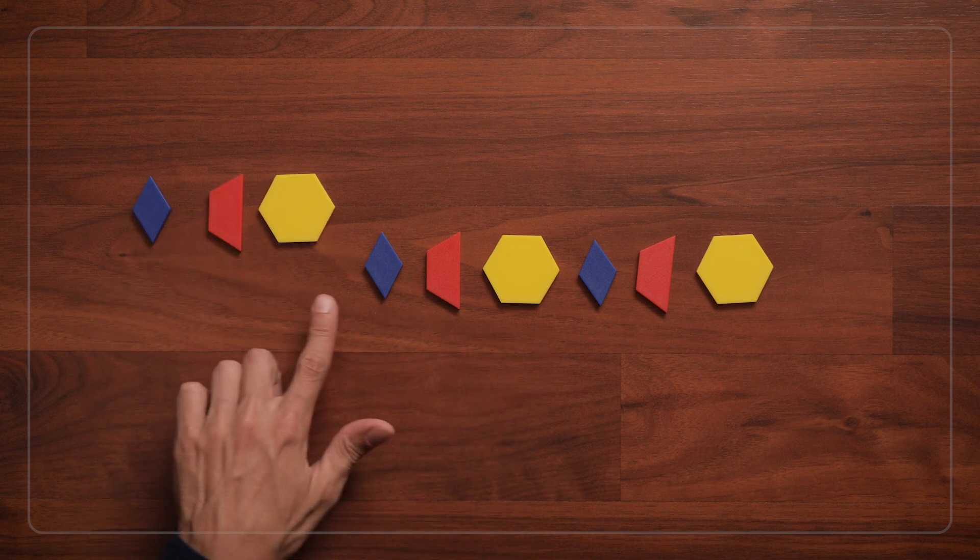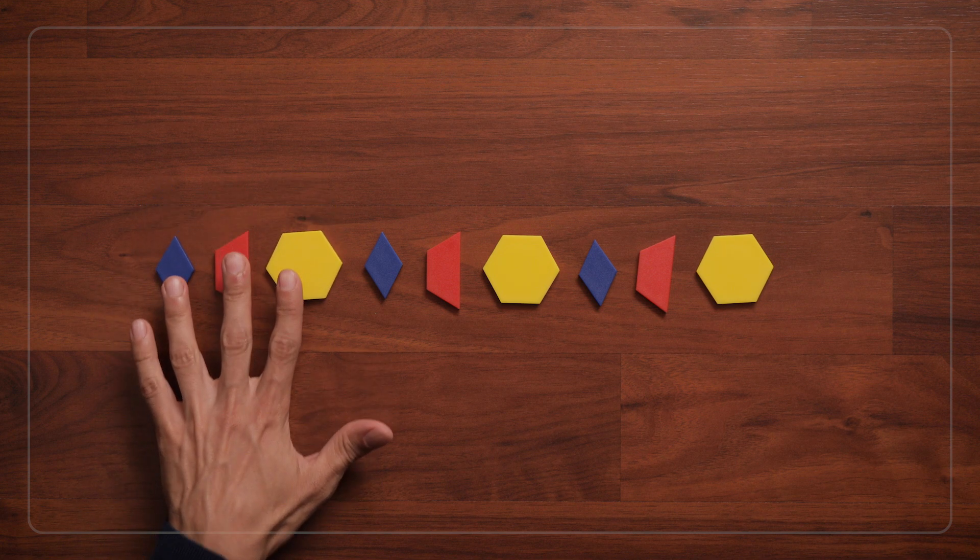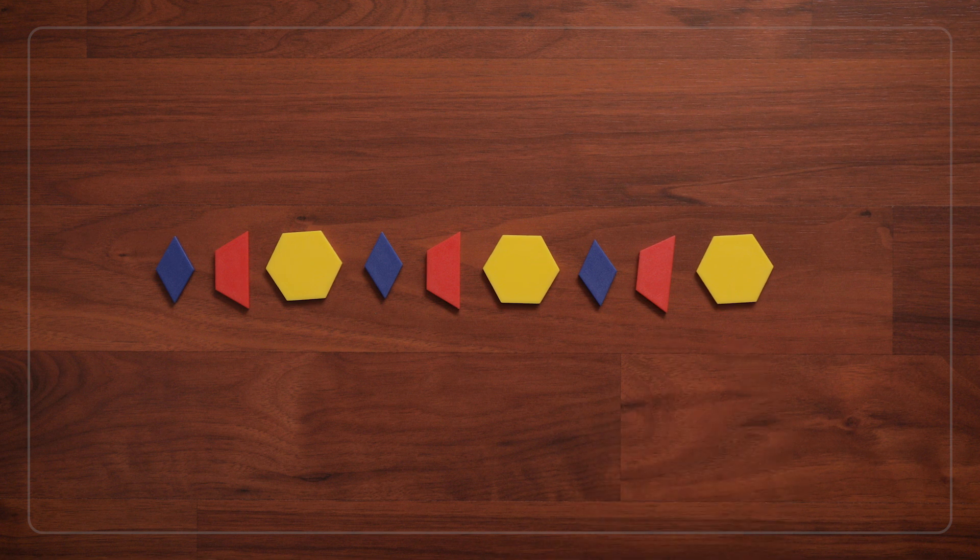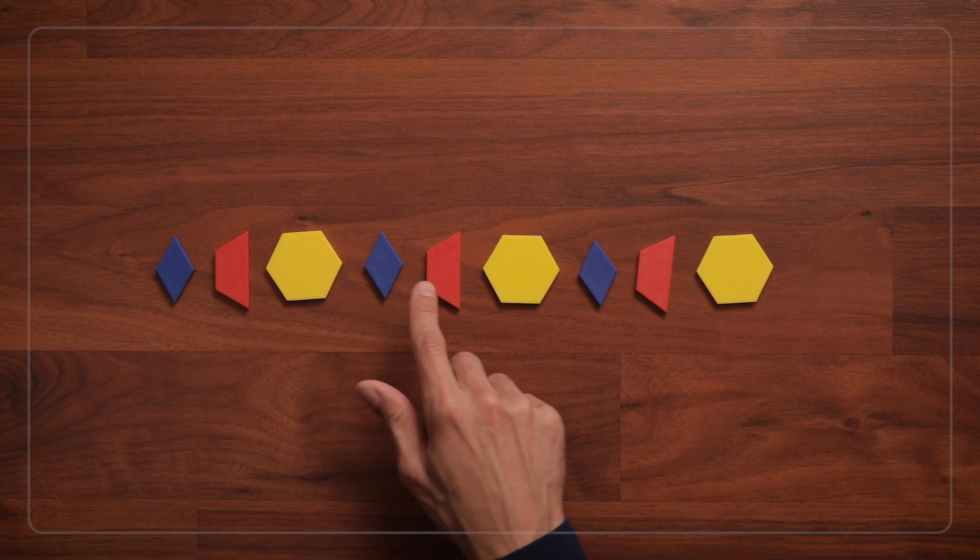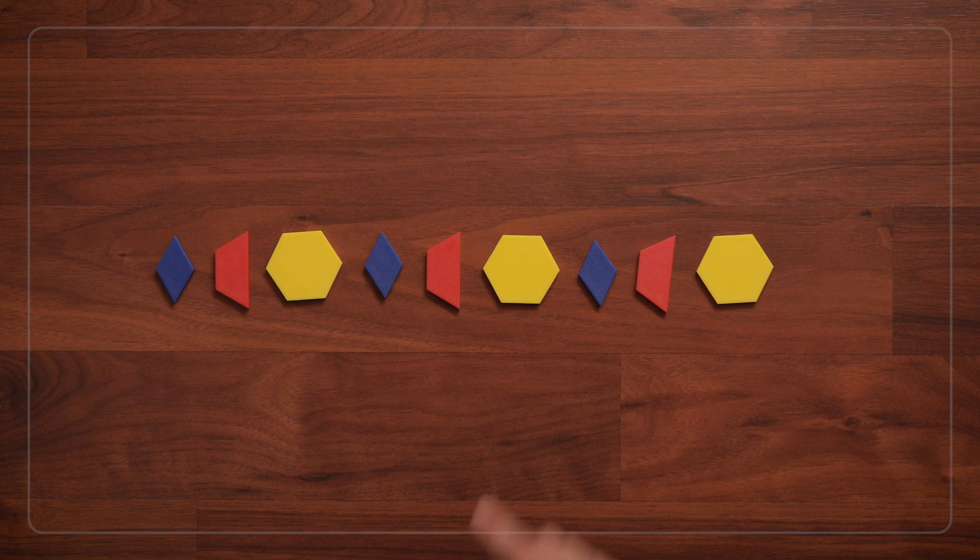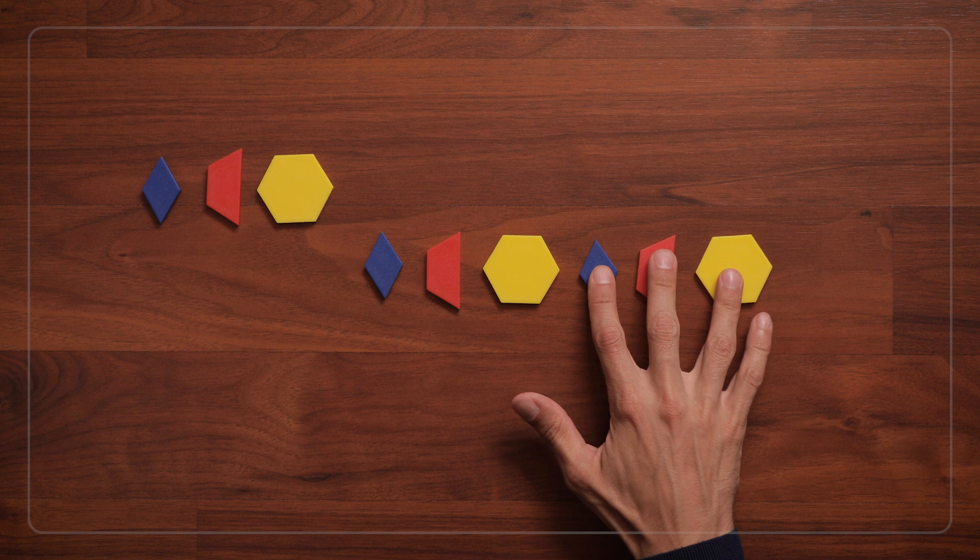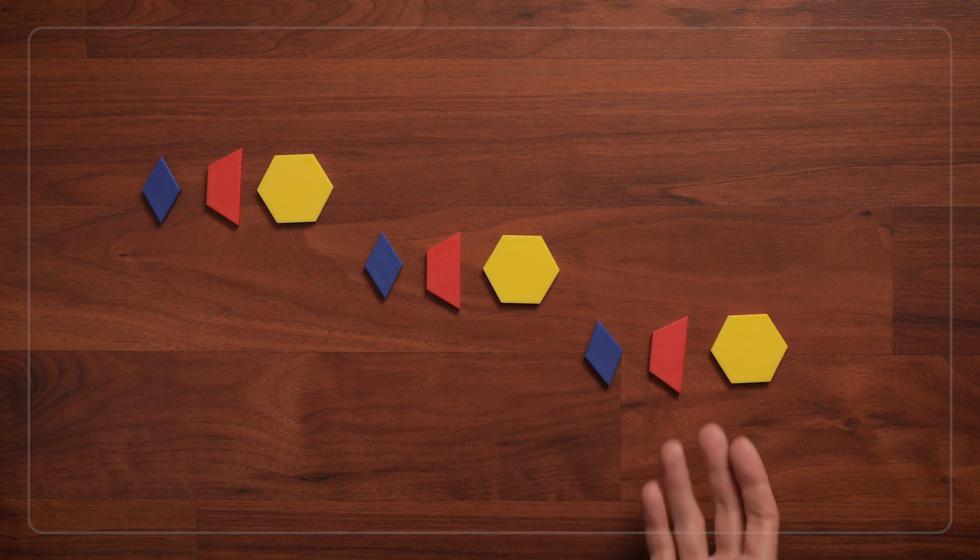And you can help kids talk about patterns and repeating units by asking, how did you know what comes next? They might say they started at the beginning of the pattern and chanted each shape to know what came next. Or maybe they knew the repeating unit was rhombus trapezoid hexagon, so they added one more unit to the pattern.